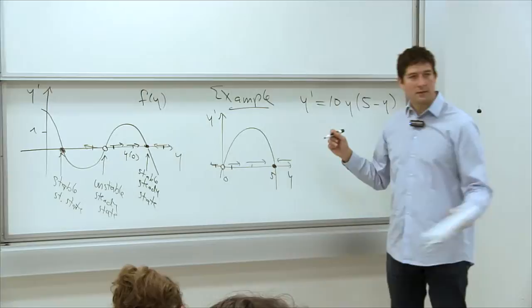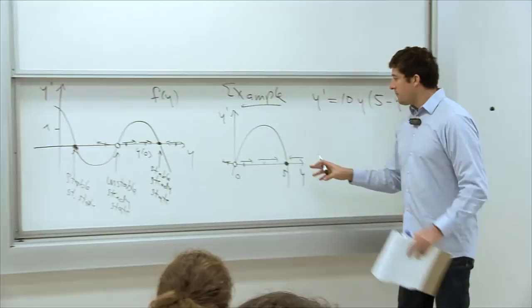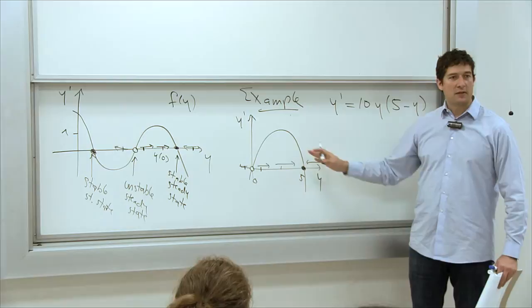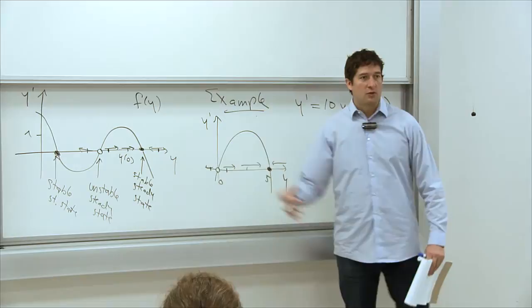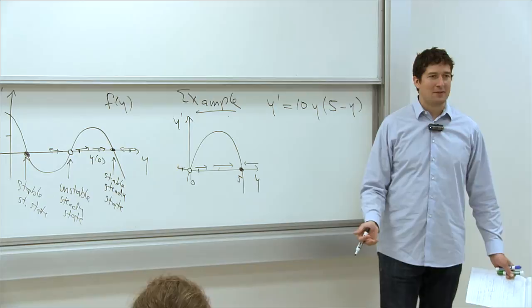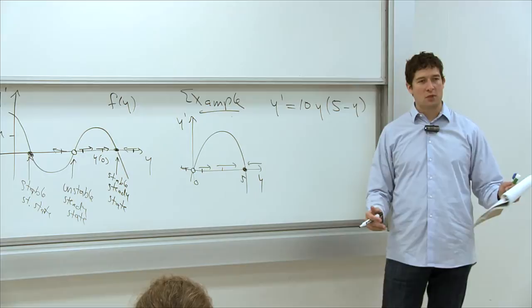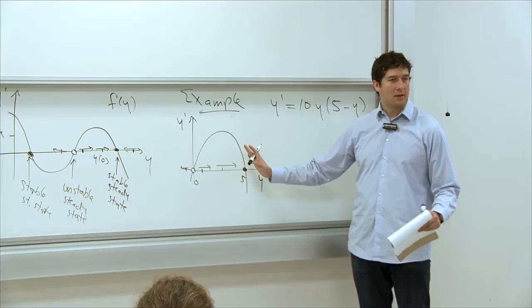Does stability relate to the slope of f? Actually, stability depends on where f is positive or negative, not necessarily the slope. However, stable points are where the function f crosses zero going downward, and unstable points are where it crosses going upward. So by looking at the slope of f at the steady state, you can tell if it's stable or unstable. An unstable point has a positive slope of f, and a stable point has a negative slope.